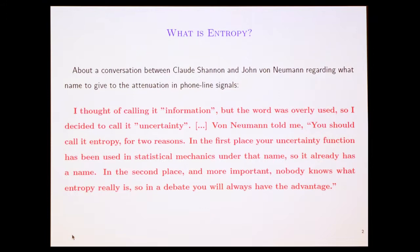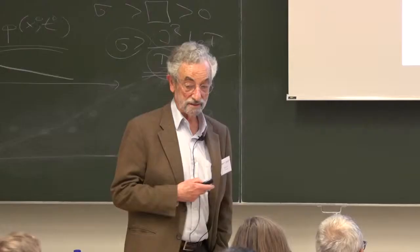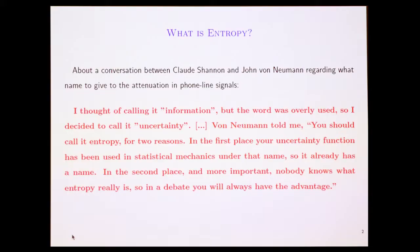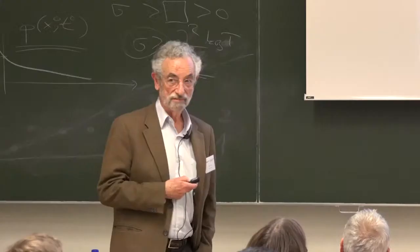Now, here is something that many people know. This is about a conversation between Claude Shannon and von Neumann regarding what name to give to the attenuation in phone line signals, which is what Claude Shannon worked on at Bell Labs. He thought of calling it information, but the word was overly used, so he decided to call it uncertainty. Now we're back again to calling it information, by the way. History goes in big arcs, comes around again.